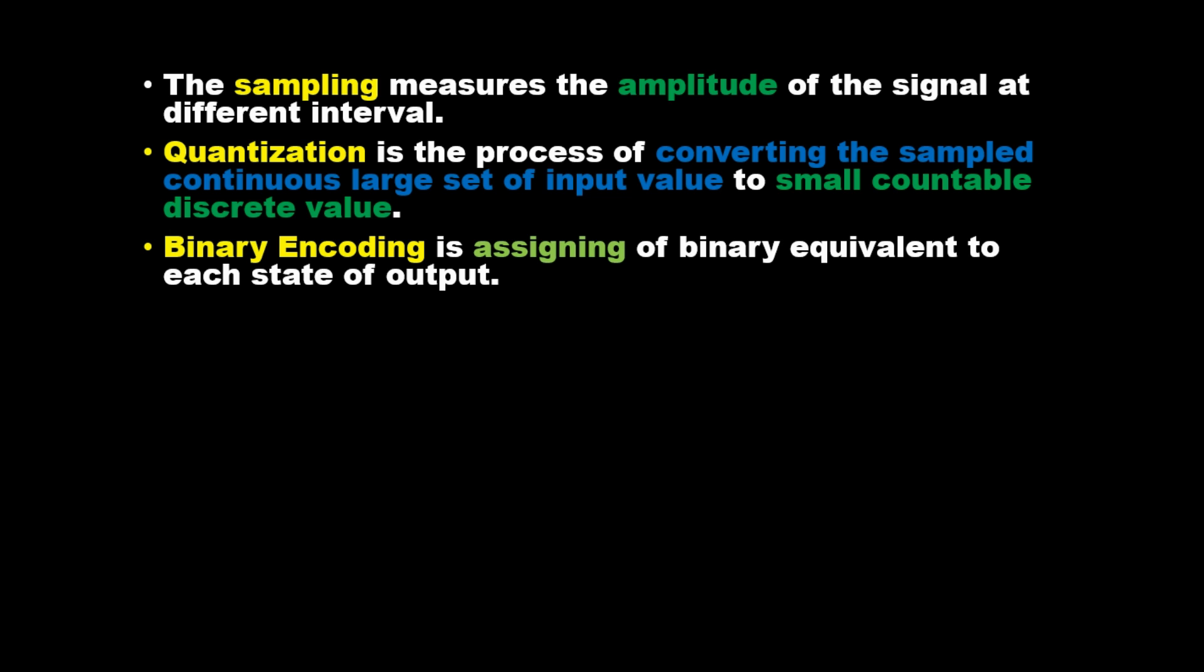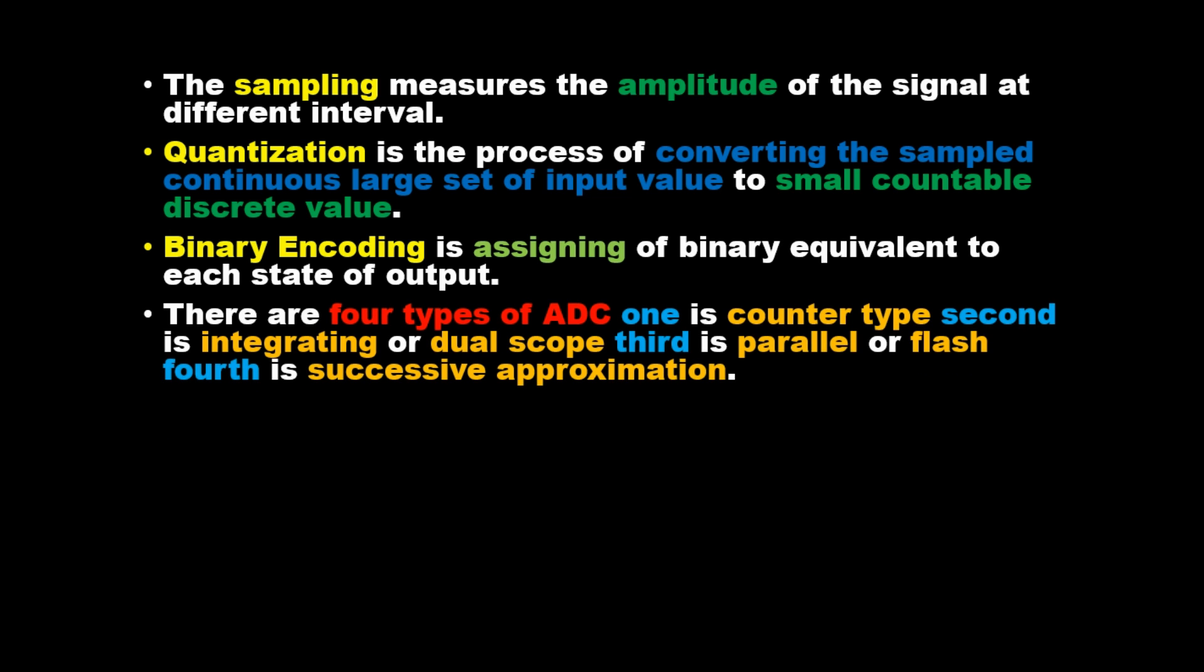There are four types of ADC: one is counter type, second is integrating or dual slope, third is parallel or flash, and fourth is successive approximation.